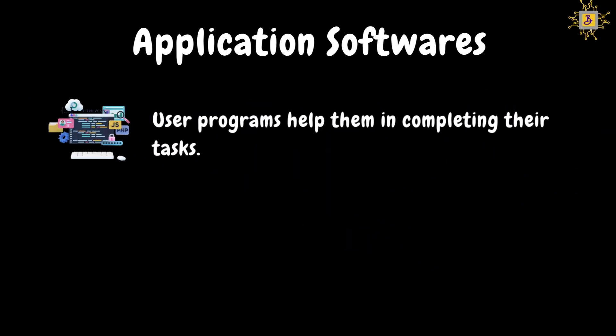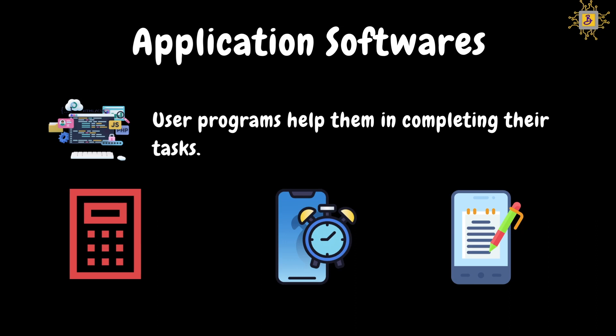Application software is also called user programs — they help users in completing specific tasks. For example, calculator software — available by default on a laptop or mobile — helps you perform mathematical calculations. Alarm clock software on mobile helps you wake up on time. Notes-taking software on mobile helps you record information. So, in these three examples, application software is developed for a specific purpose.